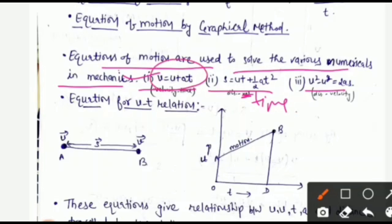The first equation, v = u + at, is the velocity-time equation — velocity and time are related. The second is s = ut + ½at², where displacement and time are related. The third is v² − u² = 2as, where we find the relationship between velocity and displacement.